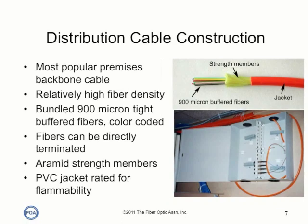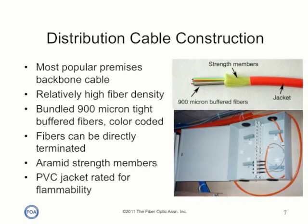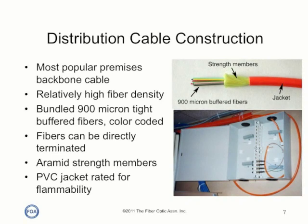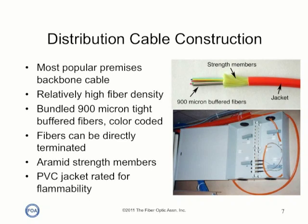Distribution cable is the most popular backbone cable for premises applications, since it offers relatively high fiber density and a small cable that is easy to install. Distribution cable has many 900 micron tight buffered fibers in the center, color coded so they can be identified, surrounded by aramid strength members and covered by a PVC jacket rated for flammability.